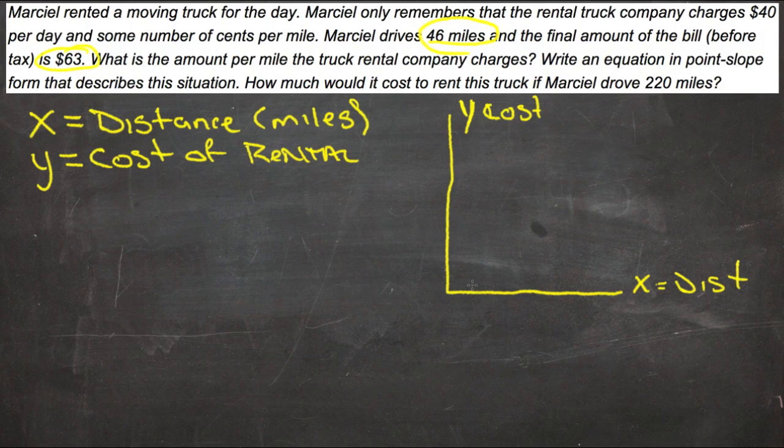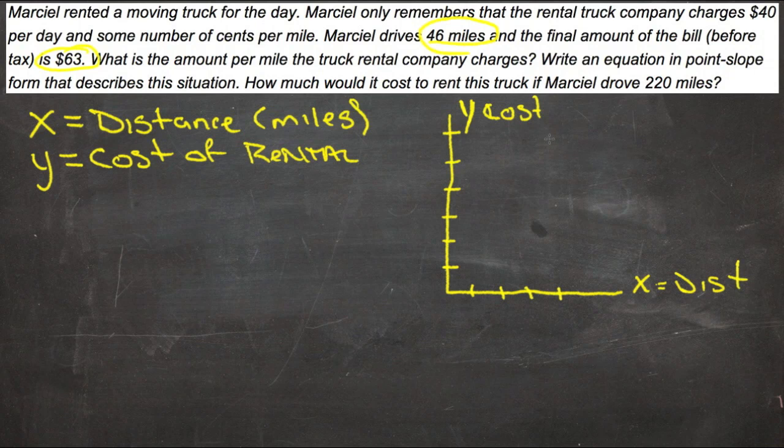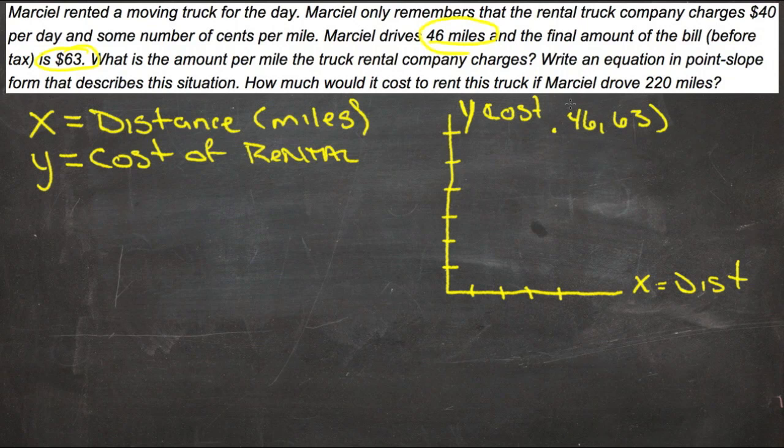Let's just go by tens here: 10, 20, 30, 40, so 46. And 10, 20, 30, 40, 50, 60, so 46, 63 would be one point here at (46, 63). We also know that when he had driven no miles at all, since there was a $40 a day charge, at zero miles he already owed $40.